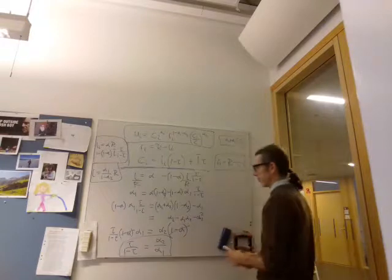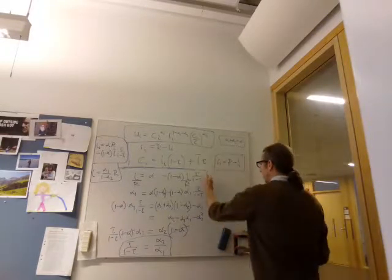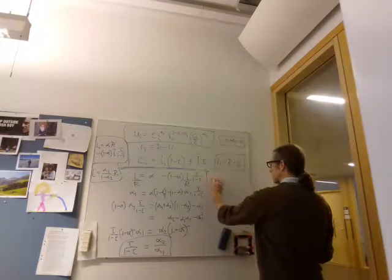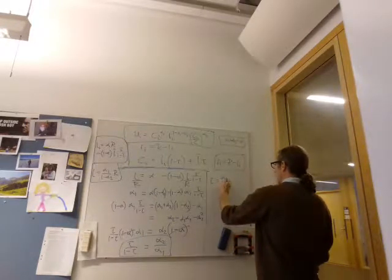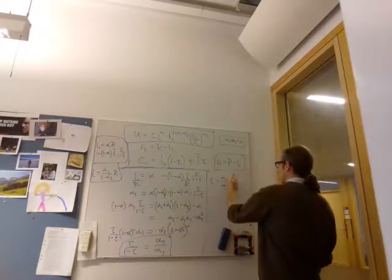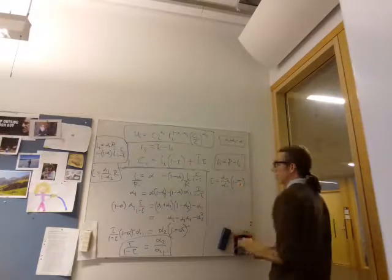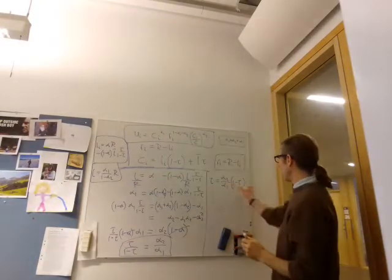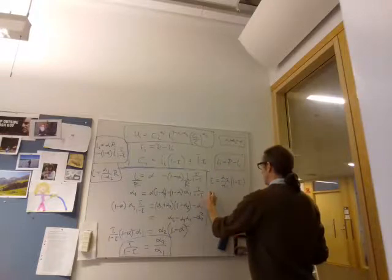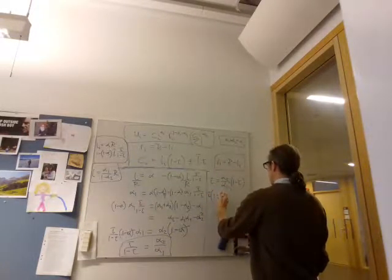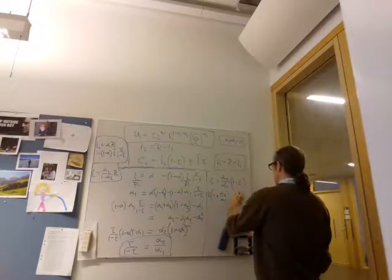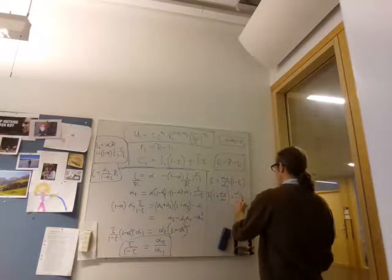Now tau over 1 minus tau is alpha 2 over alpha 1. Now multiply through by 1 minus tau. Tau equals alpha 2 over alpha 1, 1 minus tau.